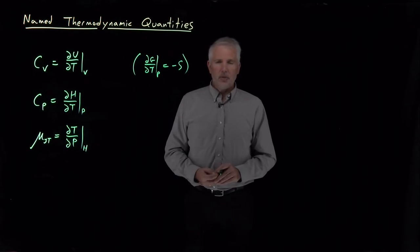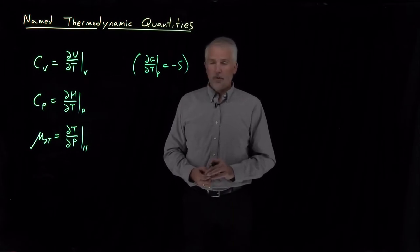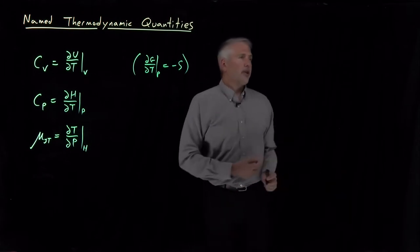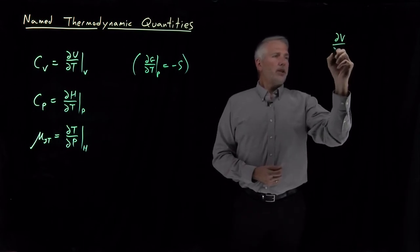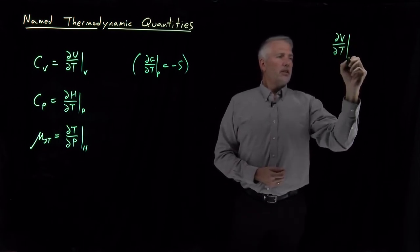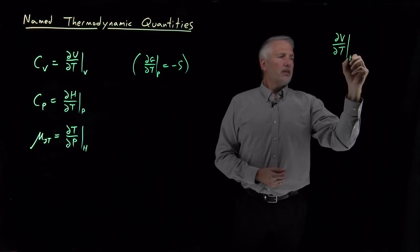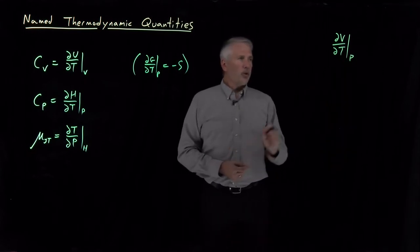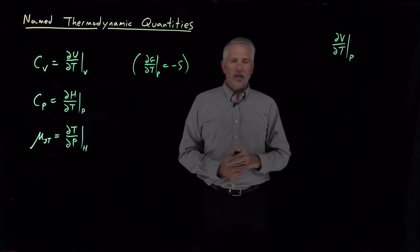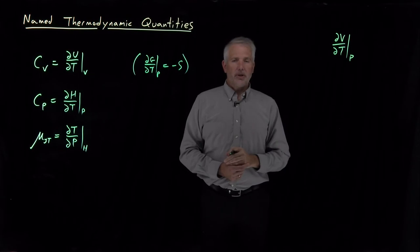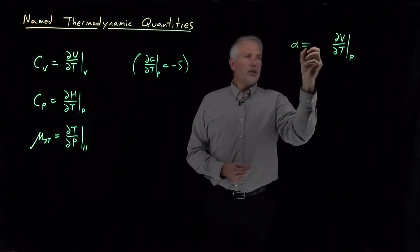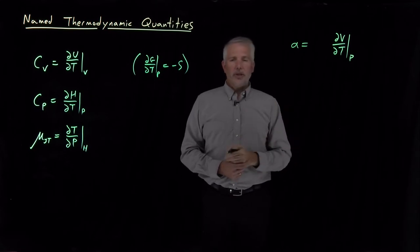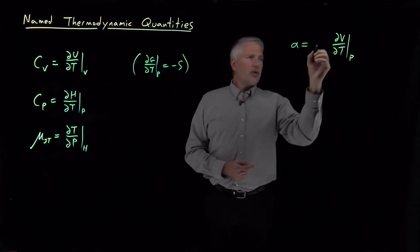That coefficient is useful enough in refrigeration that that particular ratio gets a name. There's a couple of others that are important that we'll use going forward that we haven't run across yet. We can define them now for the first time. The first of them is related to this quantity: how quickly does the volume of something change as I heat it up when I do that at constant pressure? That quantity is called the thermal expansion coefficient.